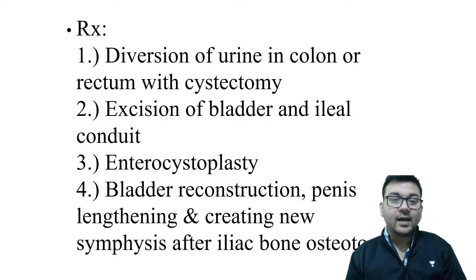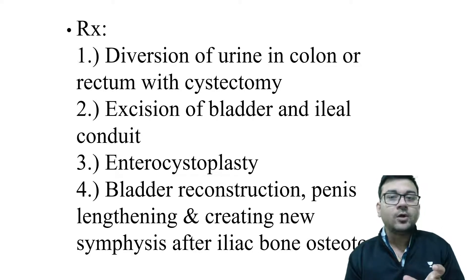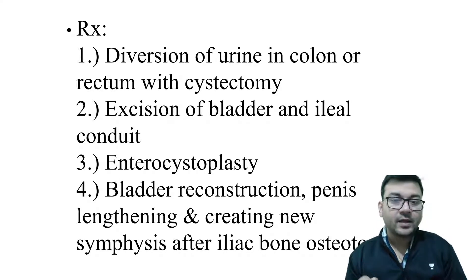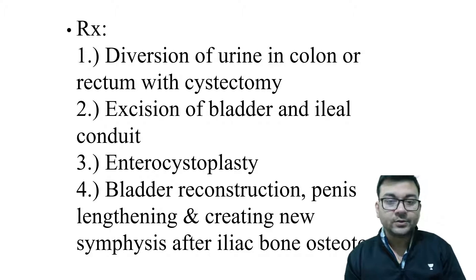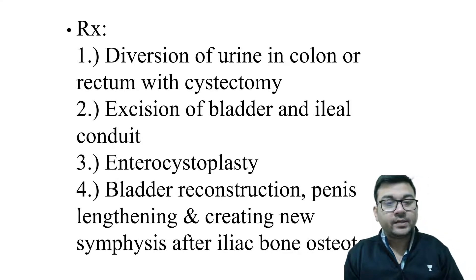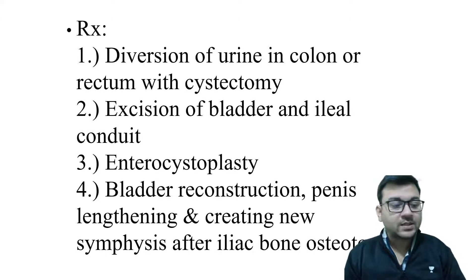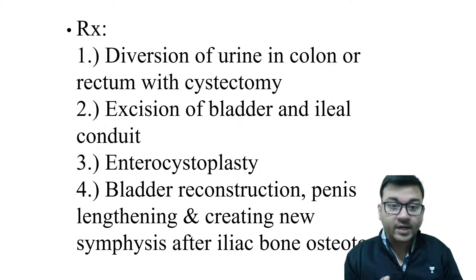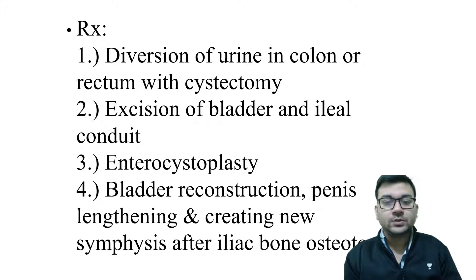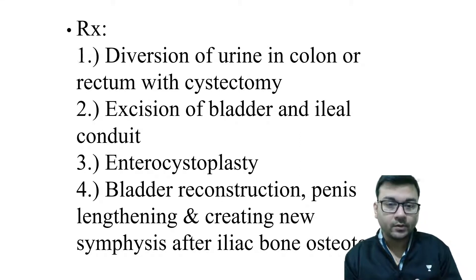Another option is excision of the bladder with an ileal conduit. In an ileal conduit, a loop of bowel — usually ileum — is taken: one end is brought out through the abdominal wall as an ileostomy, and the ureters are joined to the other end. A third technique is enterocystoplasty, where the anterior part of the bladder is repaired using bowel tissue — 'entero' refers to bowel and 'cysto' refers to bladder.